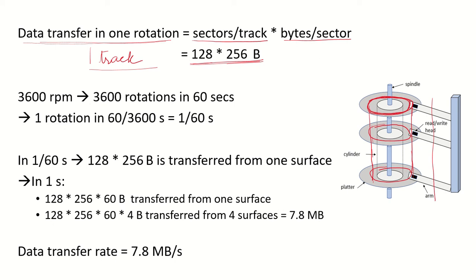The speed of the hard disk is given as 3600 rpm that means 3600 rotations in one minute which is 60 seconds, that means one rotation takes 60 upon 3600 seconds which is 1 upon 60 seconds. So in 1/60 seconds, 128 into 256 bytes is transferred from one surface from one track of one surface.